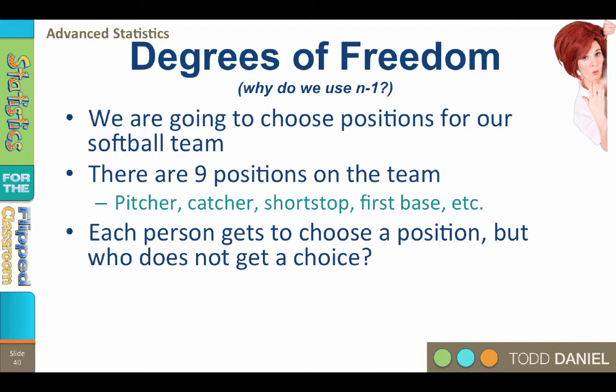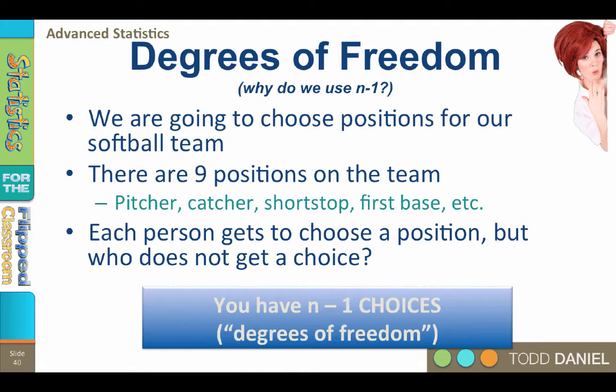When choosing among nine positions, only eight people get to actually choose. The last person's choice is chosen for him, based upon the choices of others. You have n minus 1 choices, or degrees of freedom to choose.